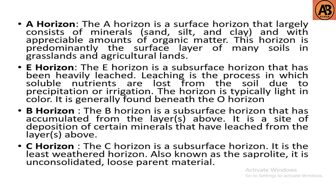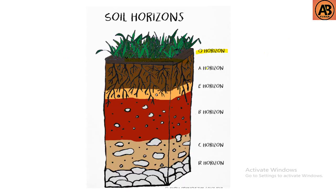The A horizon is a surface horizon that largely consists of mineral soils like sand, silt, and clay, with appreciable amounts of organic matter. This horizon is predominantly the surface layer of many soils in grasslands and agricultural lands. The A horizon is considered a mineral horizon.